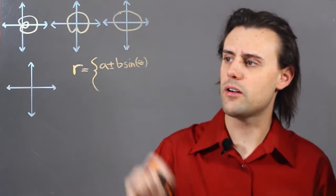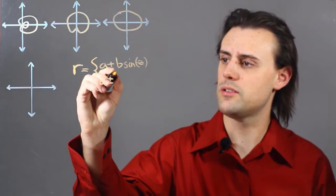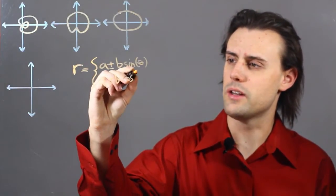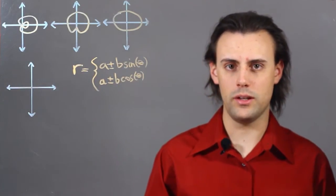where a and b are constants, or alternatively, a plus minus b cosine of theta. And there's essentially three types of Limassons.